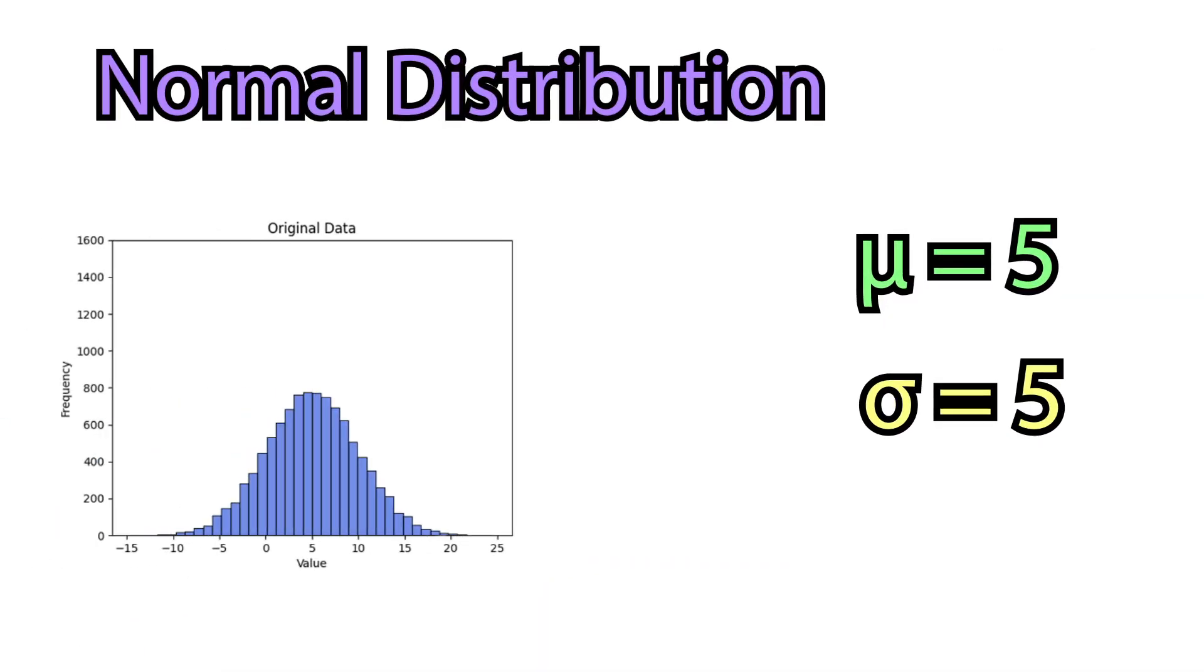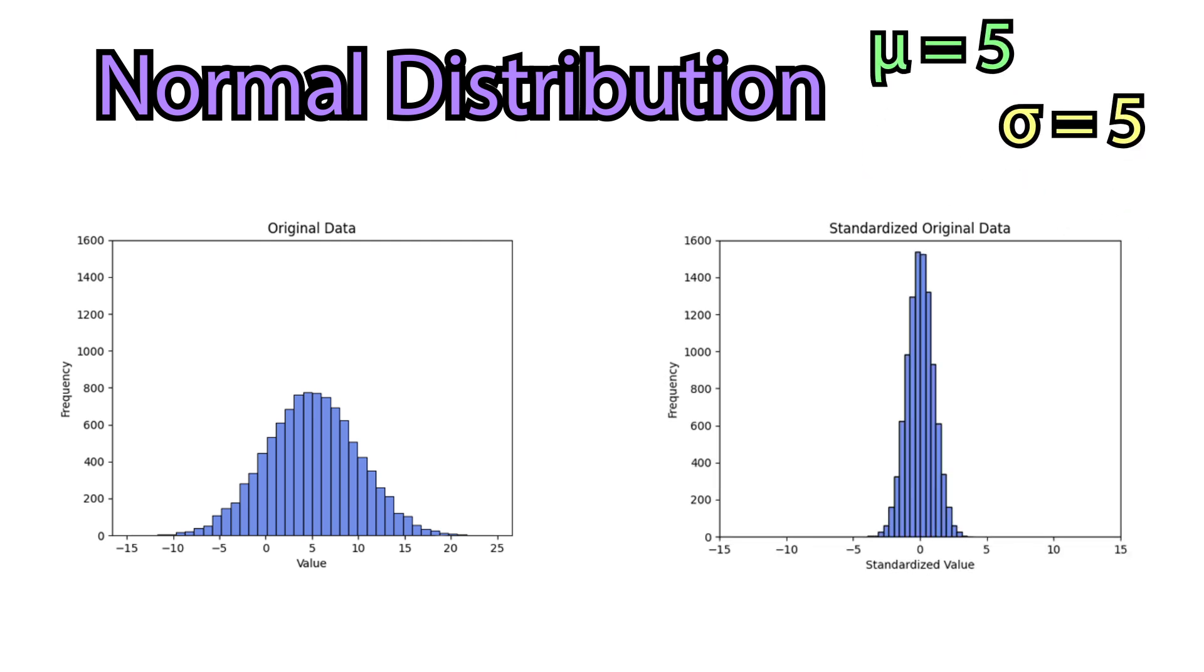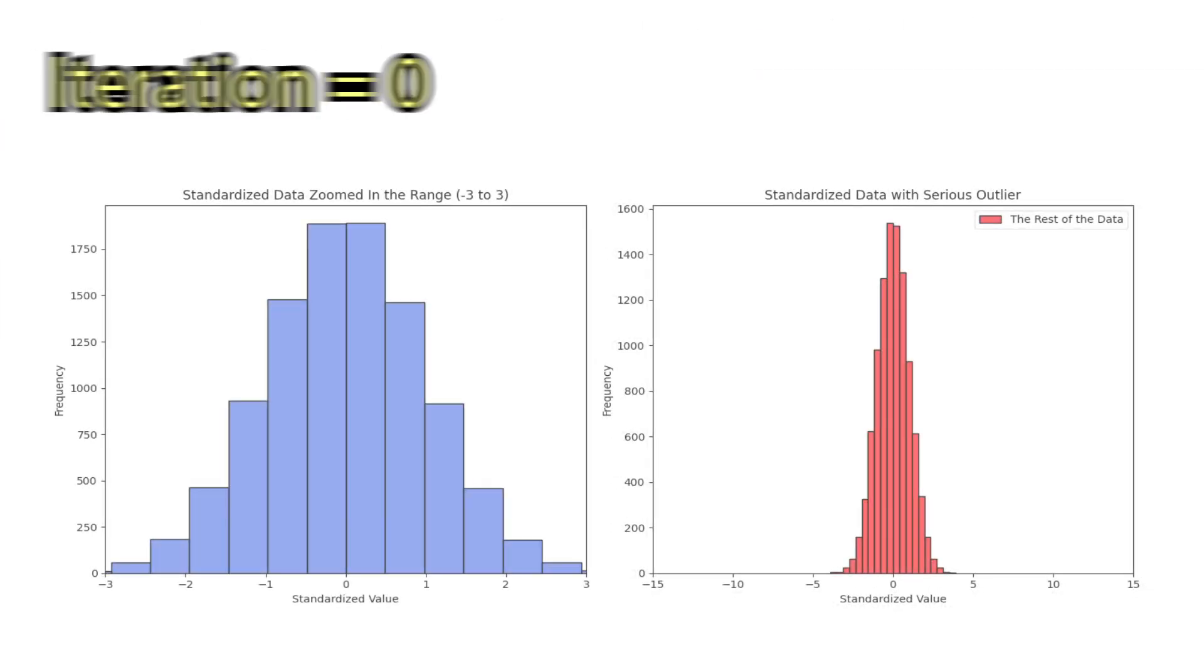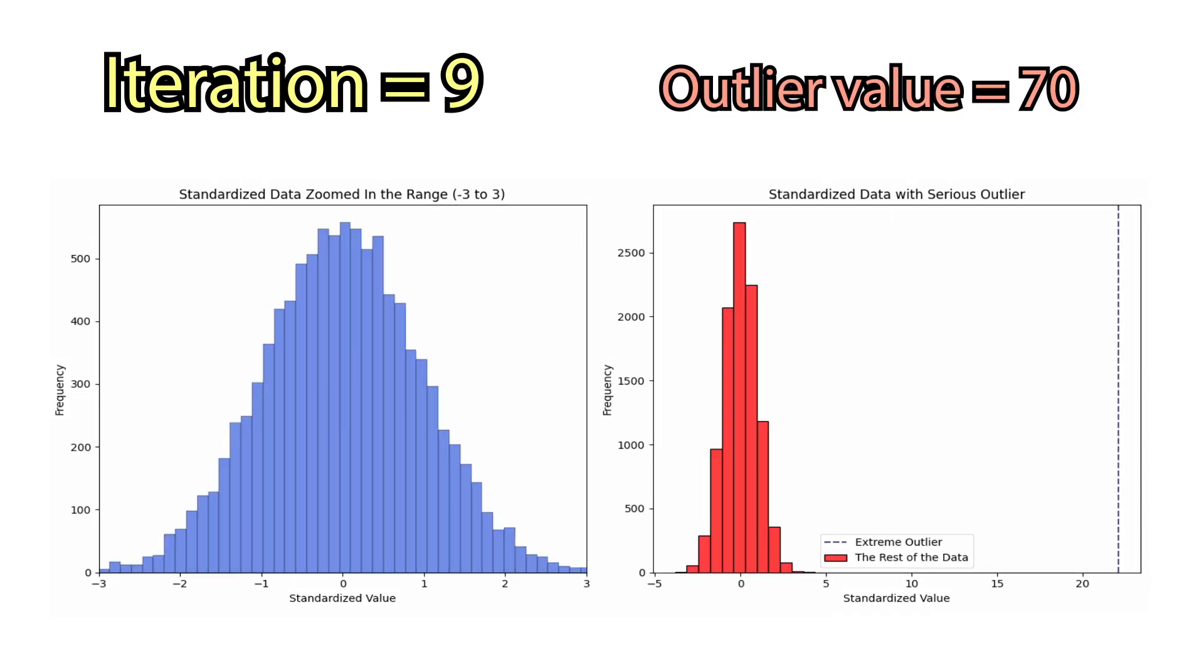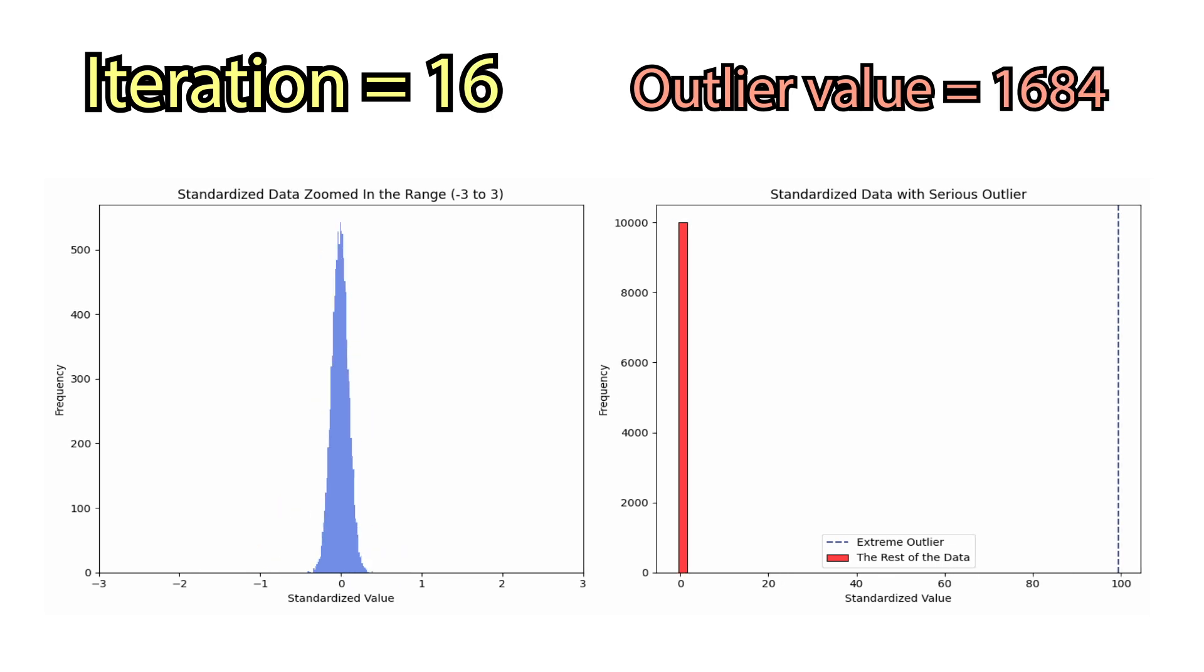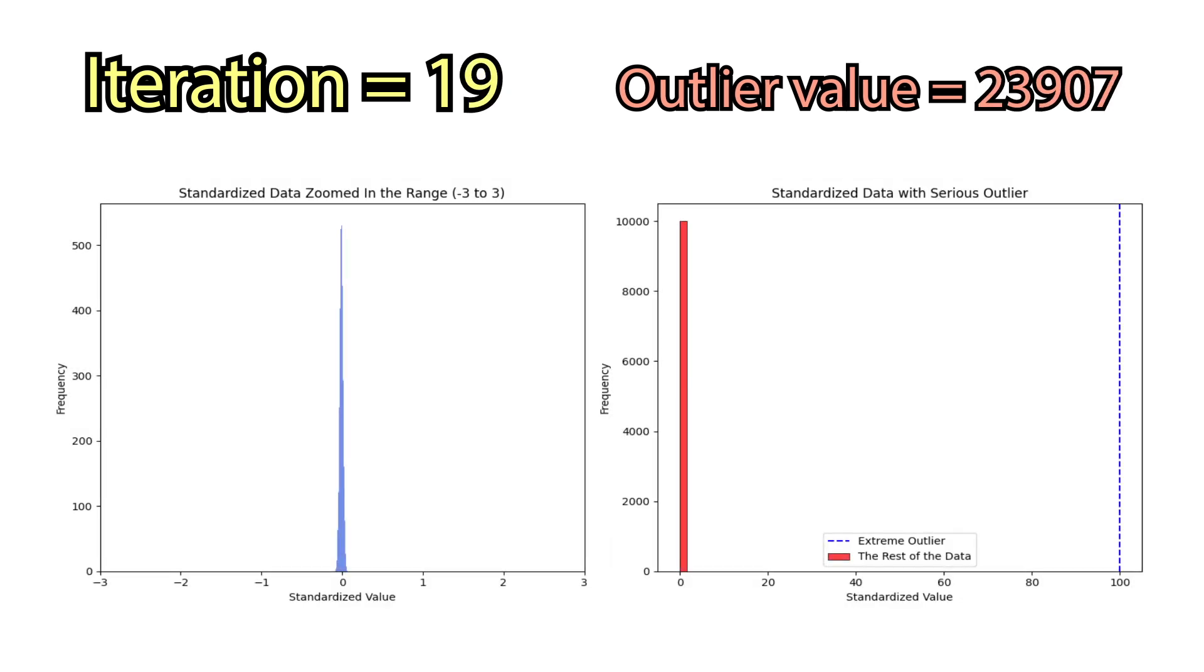I have generated normally distributed data that looks like this, and here is the standardized version of it. In each iteration, I'm going to add an outlier and standardize it to see how the distribution changes compared to the original data. As we can see, the data is becoming skewed and eventually ends up concentrating into a small portion.